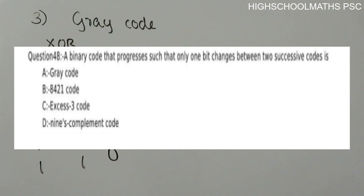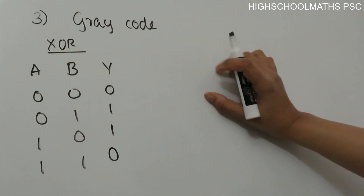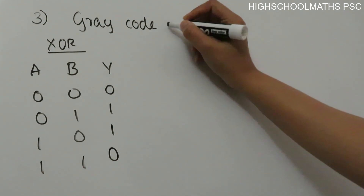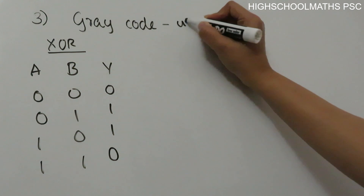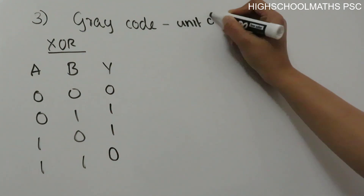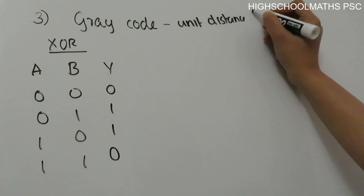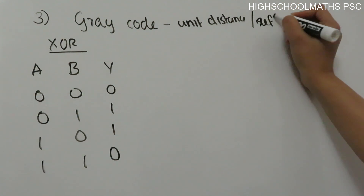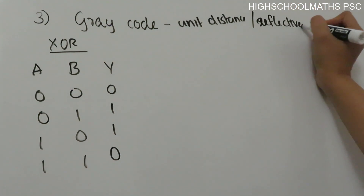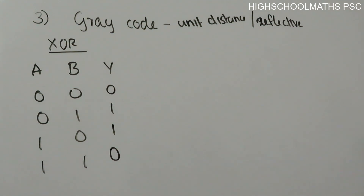Third question: a binary code that progresses such that only one bit changes between two successive codes is — the answer is Gray code. Gray code is also called Unit Distance code, because only one bit changes between any two successive code values.